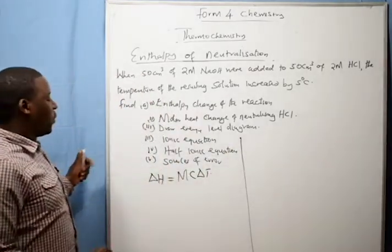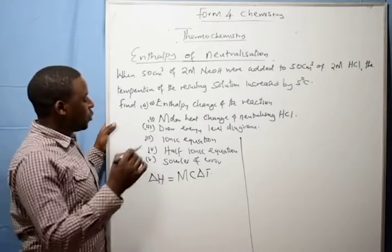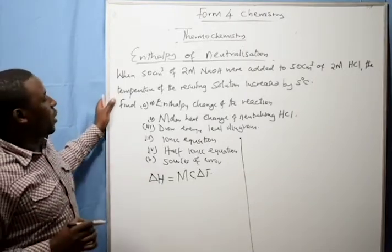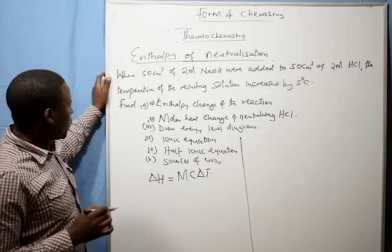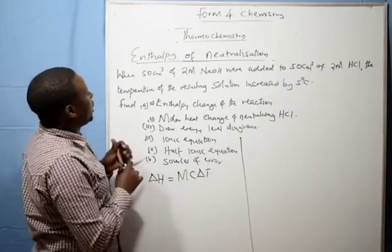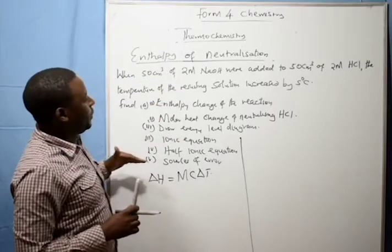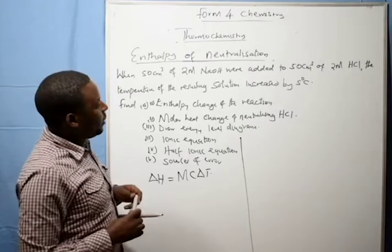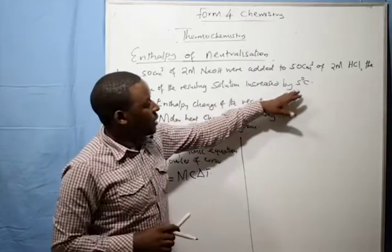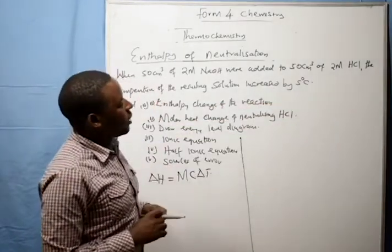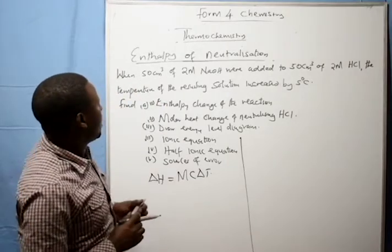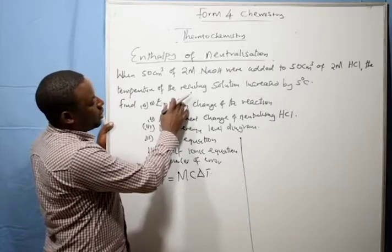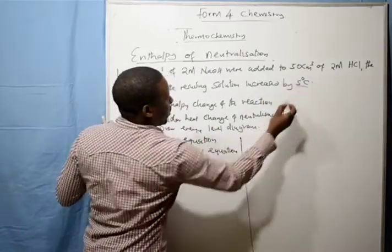Now I am going to use a sample question to discuss how you get enthalpy of neutralization. In our question we have 50 cubic centimeters of 2 molar sodium hydroxide added to 50 cubic centimeters of hydrochloric acid. The temperature of the resulting solution increases by 5 degrees.